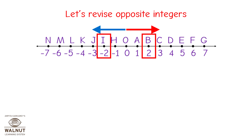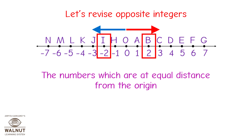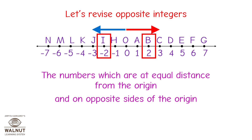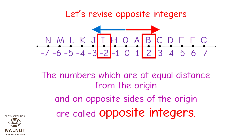Let's revise opposite integers. The numbers which are at equal distance from the origin and on opposite sides of the origin are called opposite integers.